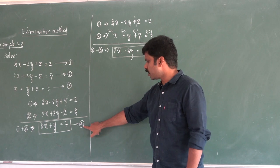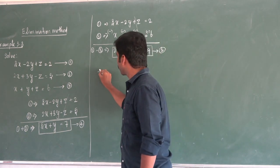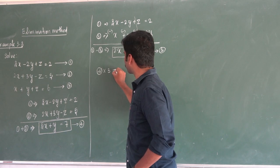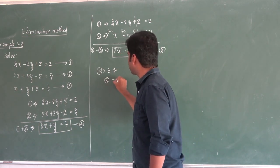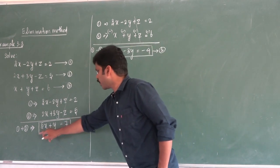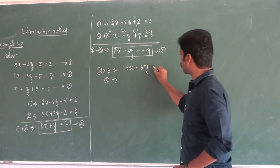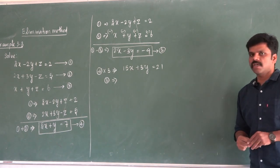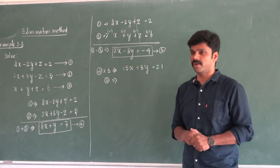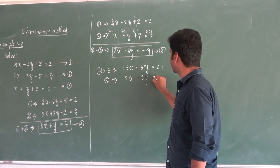So the fourth equation — I am going to multiply this fourth equation by 3. So 3 times 5x is 15x, and 3 times y gives 3y, and 3 times 7 is 21. And I will not forget to multiply the right-hand side too. The fifth equation I will not disturb: 2x minus 3y equal to minus 4.